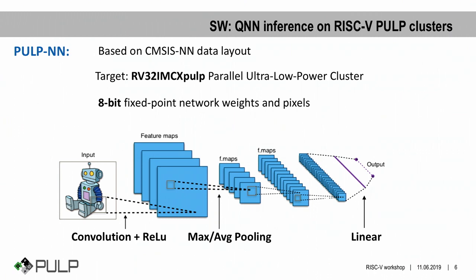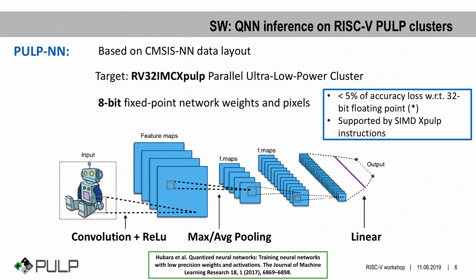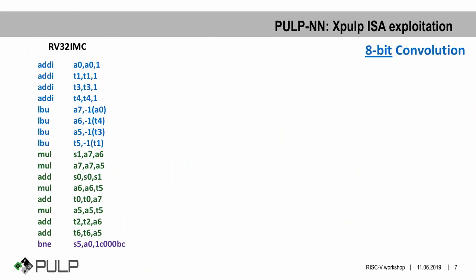We target 8-bit fixed-point operands, since it has been widely demonstrated that 8-bit quantized neural networks have an accuracy drop which is negligible for most IoT deep learning applications, with respect to the 32-bit floating point counterpart. The 8-bit data is also well supported by the XPULP instructions.